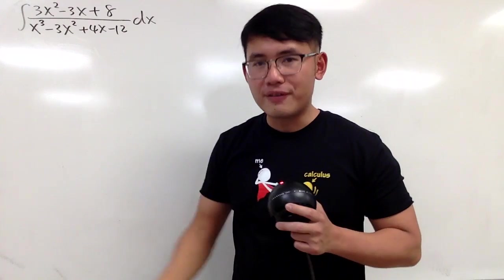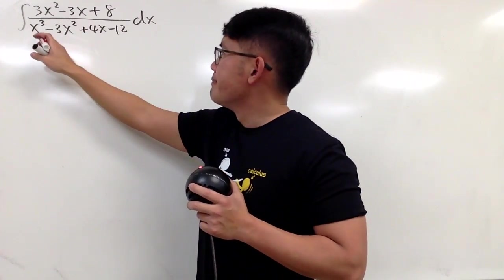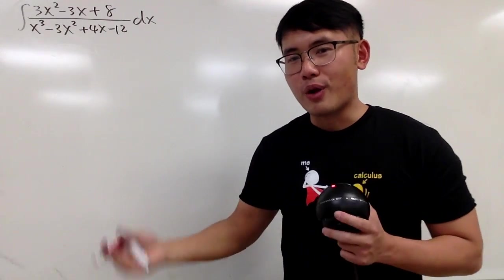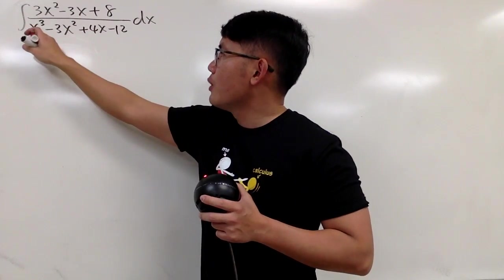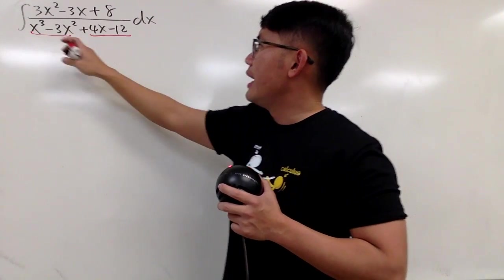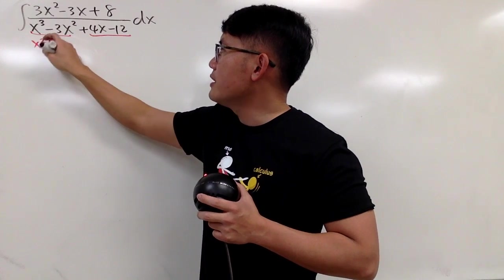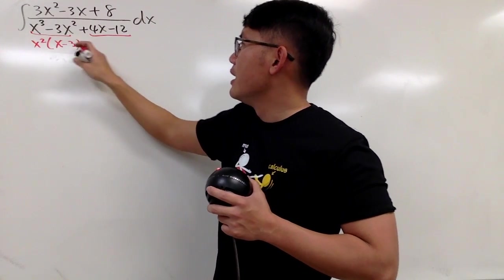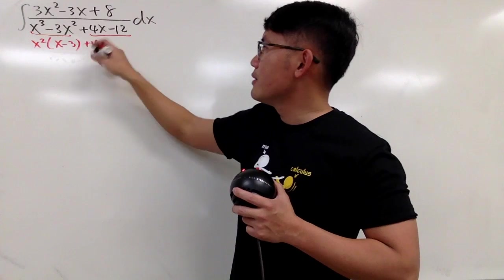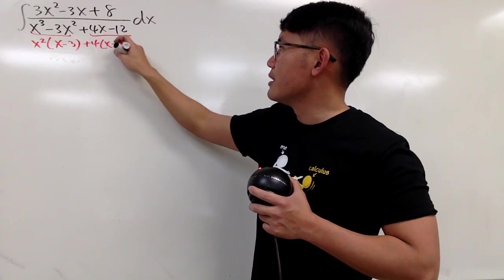First, this denominator, we have to factor that. And to do so, we have four terms. So just like the good old Algebra days, we'll do this by grouping. So I'll look at this two and this two, and we can factor out x squared first, and then we get x minus 3. And then from here, we can pull out the 4, so we have x minus 3, like this.